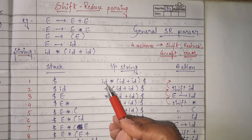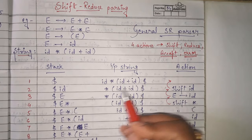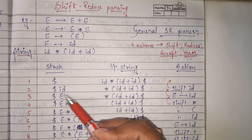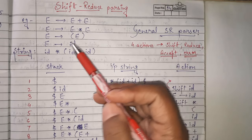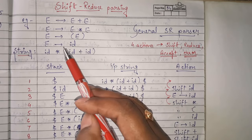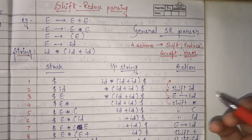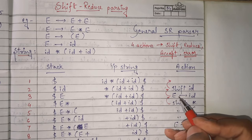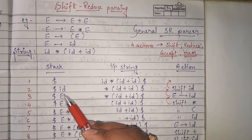In the second step, we shift ID into the stack. So the stack contains dollar ID, and the input string contains star id plus id and dollar. Now in the next step, we check: is ID present as part of the RHS in the grammar? Yes, it is present in the production E → id. So we do a reduce action — we reduce this ID by E, writing E → id as the action.